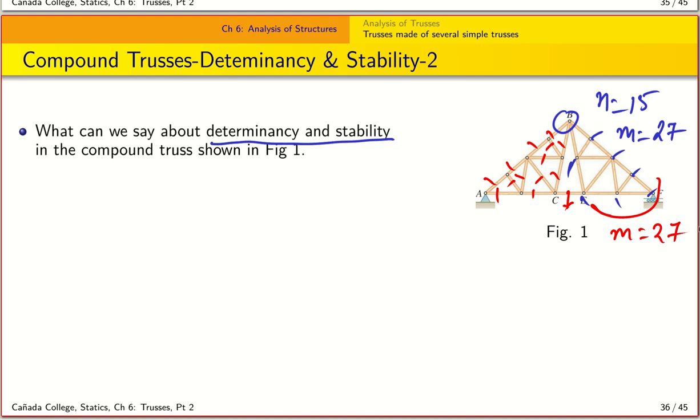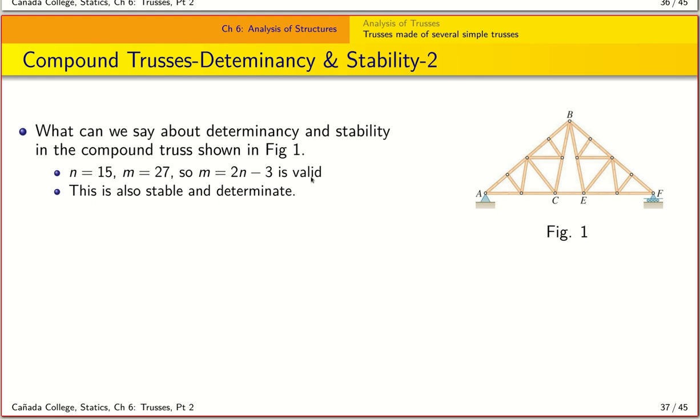And so that makes sense. And you can also see that we have three unknowns here. So that is basically our roller joint and our fixed joint. So that means that M equals 2N minus 3 is a stable structure and determinate.